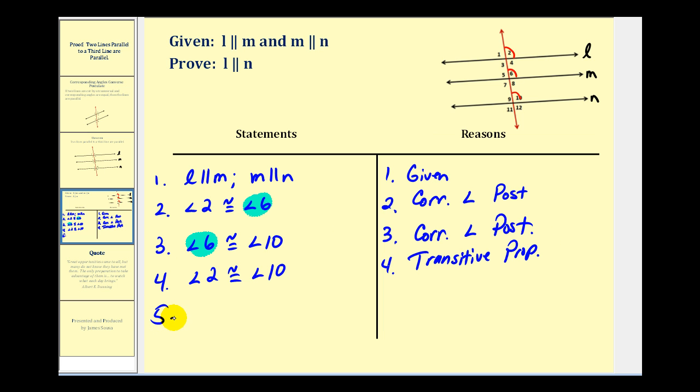And then step five, if angle two is congruent to angle ten, we can conclude that line L is parallel to line N. And this is by the corresponding angle converse postulate. And now we have it. I hope you found this example helpful.